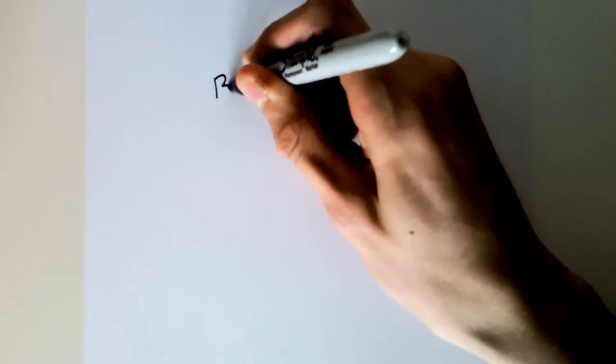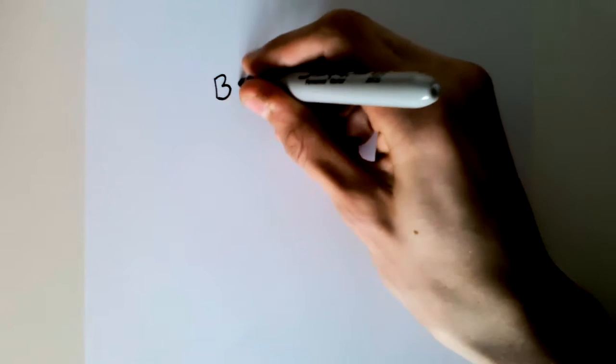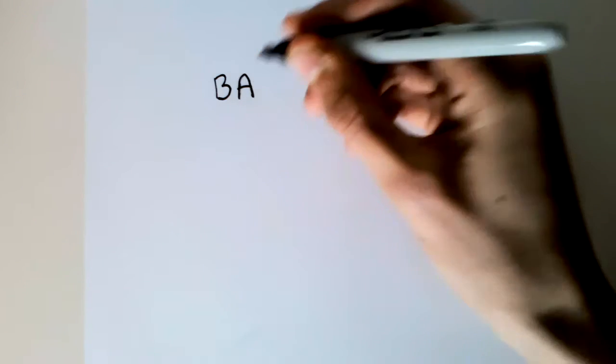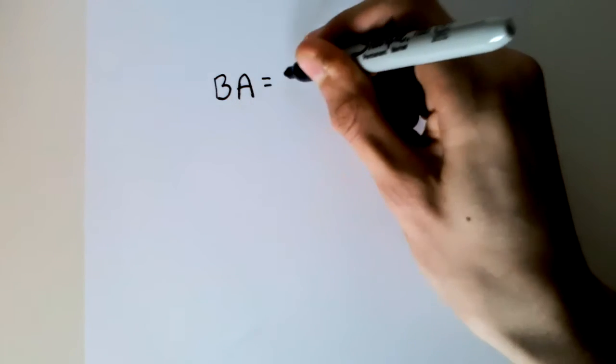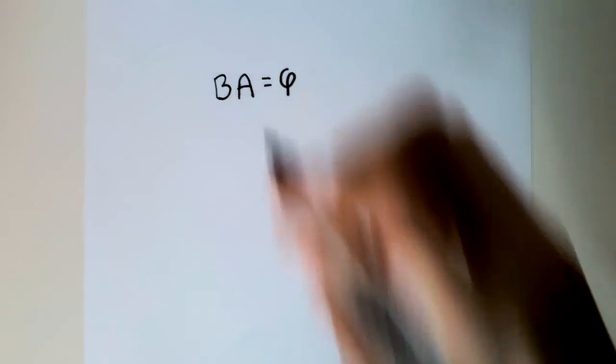We will now look at magnetic flux. The magnetic field strength B multiplied by the area swept out by conductor A is called the magnetic flux, and it is shown by this symbol phi, more specifically, lowercase phi.